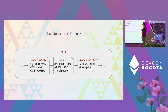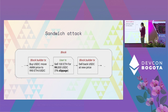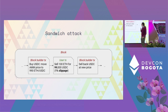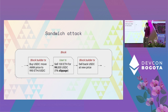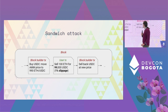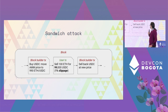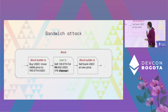So how does it work? The block builder creates two transactions, one before and one after. This first transaction buys USDC and moves the price of the AMM to the minimum that would be accepted by the user. The user trades anyway because this is, according to the slippage, still valid. And then finally the block builder can sell back the USDC at the new price. Basically this is a safe bet for the block builder because the state update is controlled by them.